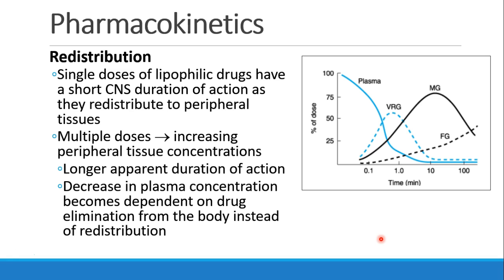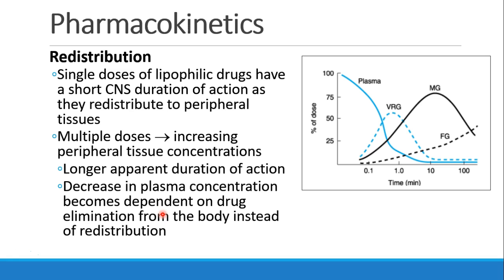What if I gave a dose of propofol every two minutes? As I keep giving multiple doses, I keep restoring the plasma concentration, and it keeps distributing drug into all compartments, which start to fill up and saturate. The drug won't move as easily from plasma to the vessel-rich group because it's getting filled, and similarly the other groups start to saturate, making the drug appear to have a longer duration of action. Eventually, when enough drug has been given and compartments are full, plasma levels start to drop based on elimination rather than redistribution.